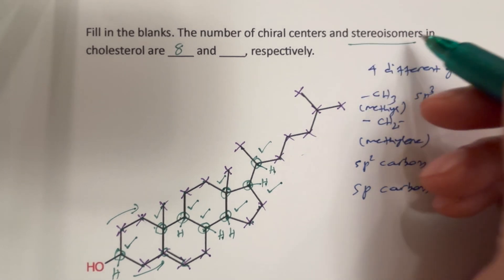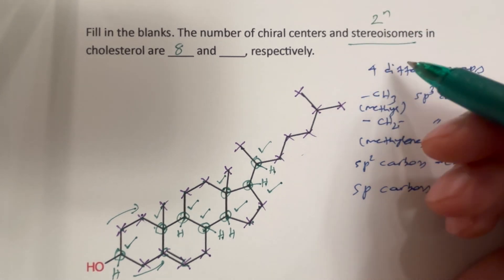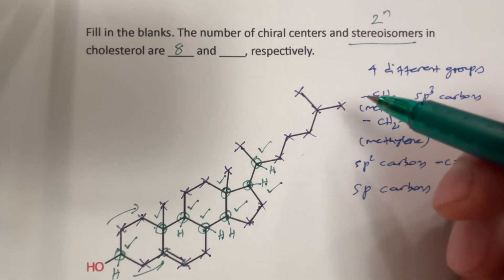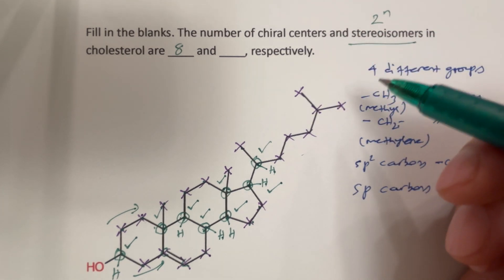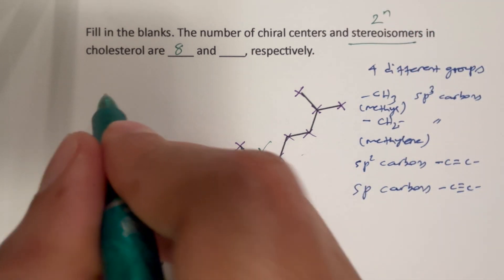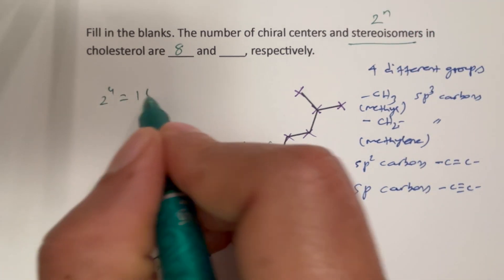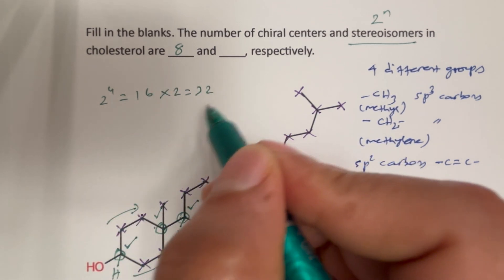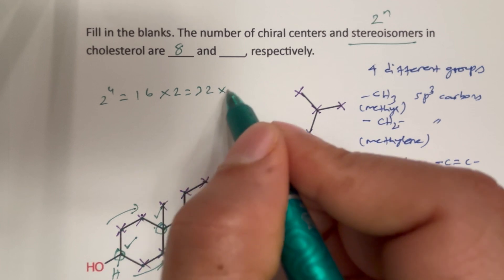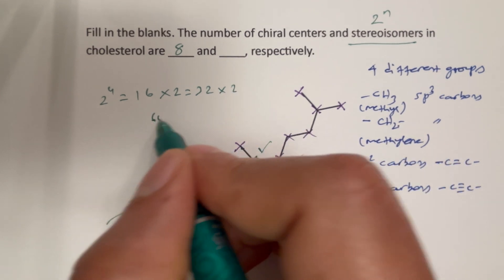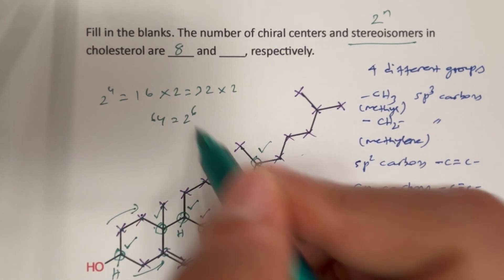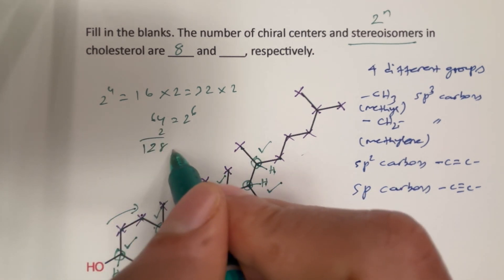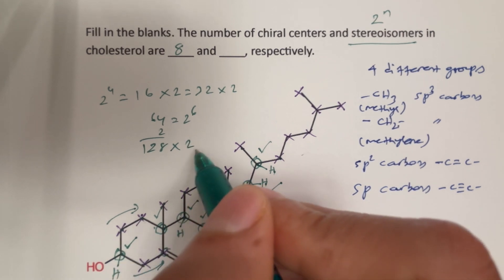The number of stereoisomers is 2 to the power n, where n is the number of stereo centers — in this case chiral centers. So 2 to the power 8: 2^2 = 4, 2^4 = 16, 16 × 2 = 32, 32 × 2 = 64 (that's 2^6), 2^7 = 128, and 128 × 2 = 256. So we will have 256 stereoisomers in cholesterol.